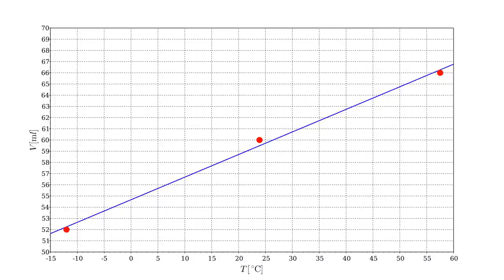In a freezer, at about minus 12 degrees, the volume was 52 milliliters. And in hot tap water, at about 57 degrees, the volume was 66 milliliters. The milliliter markings are not very precise, but we do get three measurements that fairly closely lie on a line. This line could be used to convert arbitrary syringe volume measurements to temperature.